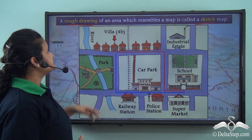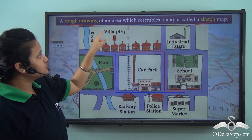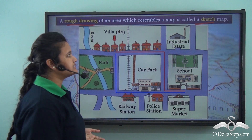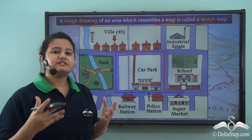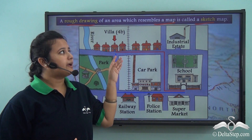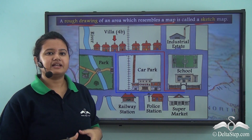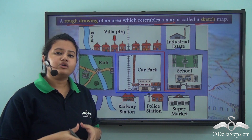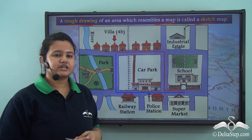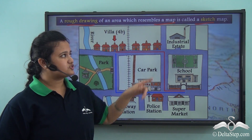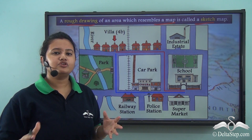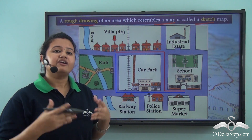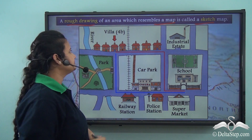Rather, it is called a sketch. A sketch is a rough drawing of an area which resembles a map. The difference between a map and a sketch is that maps are always drawn to scale, but sketches are never drawn to scale — they are rough drawings of an area.